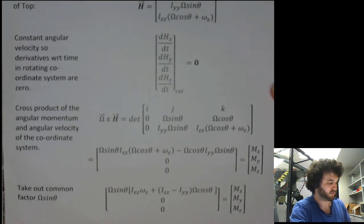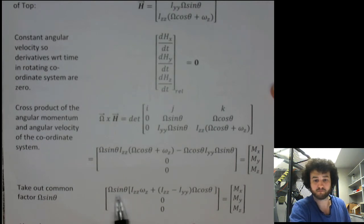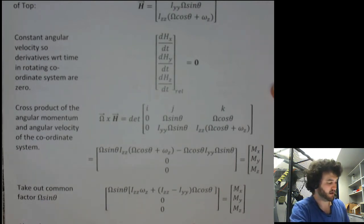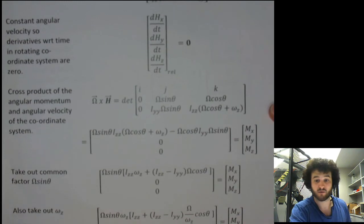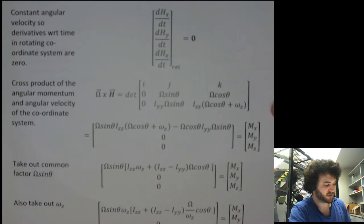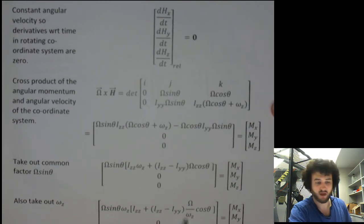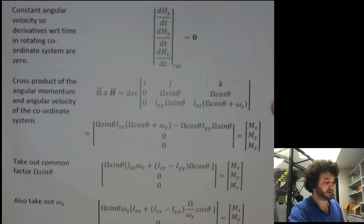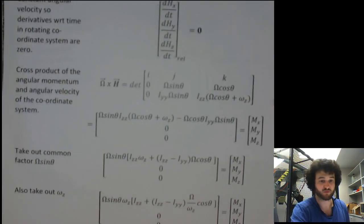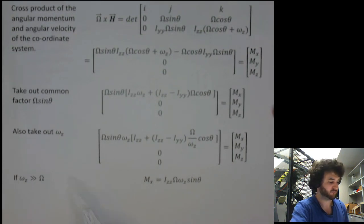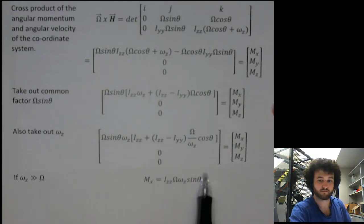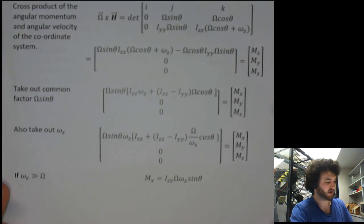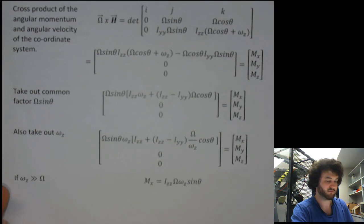We can clean this up by taking out the common factor of omega*sin(theta), and also taking out omega_z. When the body is spinning much faster than it is precessing — as is the case with the spinning top — the second term goes to zero, leaving a very simple equation relating the moment required to maintain precession to the spin and angular velocities. I hope that cleared things up. If not, send me an email. Thanks.